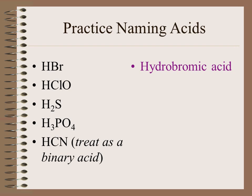HClO is a ternary acid, and we know that hydrogen is the cation, so ClO is the anion. ClO being the hypochlorite ion, the name of the acid would be hypochlorous acid, when the -ITE ending changes to -OUS.